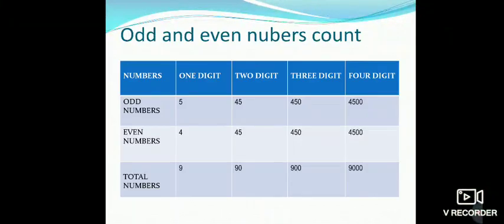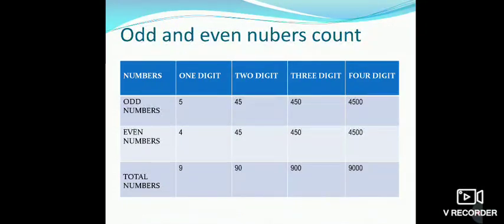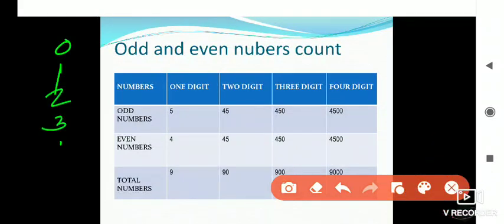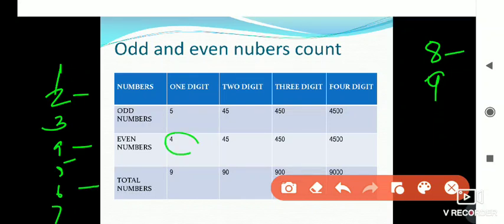In this way we identify even and odd numbers. Now let us understand how many even and odd numbers are present among one-digit numbers. One-digit numbers go from 0 to 9. From these, 2, 4, 6, 8 are the 4 even numbers. So there are 4 even numbers in one digit.